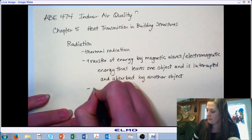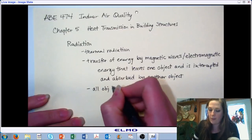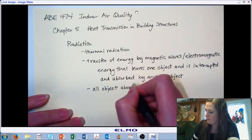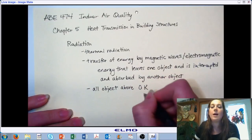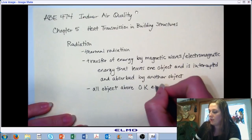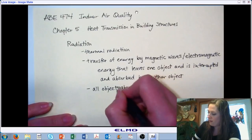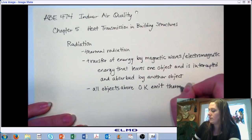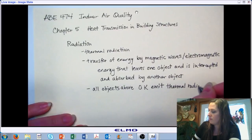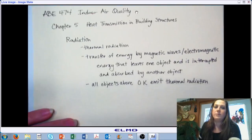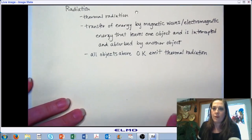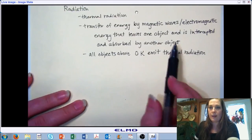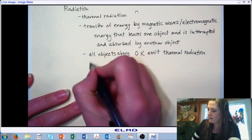Any object, any surface that is above zero Kelvin, emits thermal radiation. So the first thing we're going to talk about is emitted radiation — the electromagnetic energy that is leaving a surface.